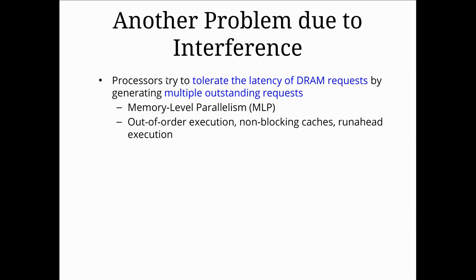We're going to talk about another problem that happens with multi-threaded systems and memory access. One thing that happens is that at the CPU level we create multiple memory requests at once and allow the memory controller to sort of schedule those — having more things that it can move around and schedule appropriately.